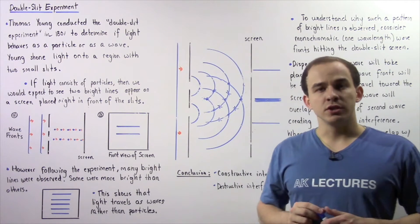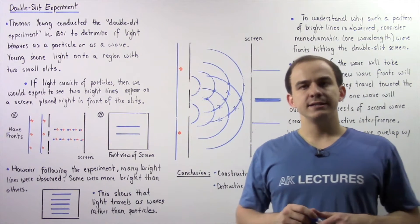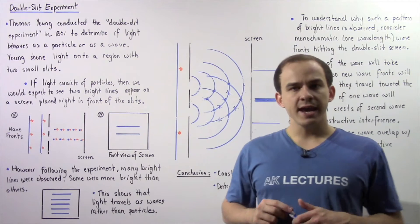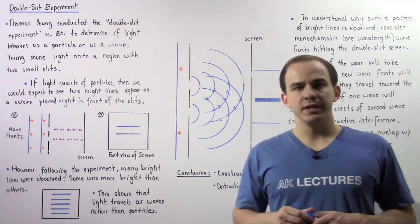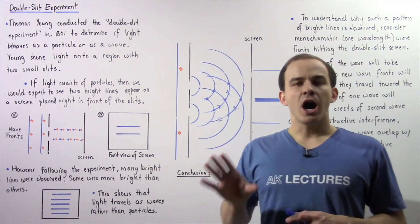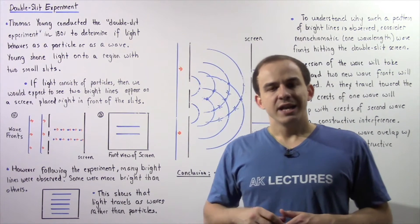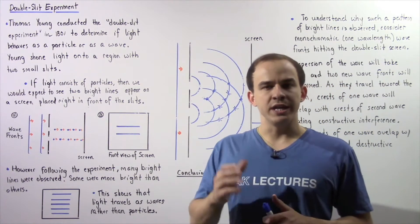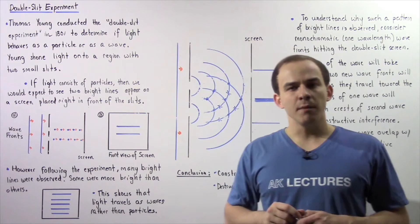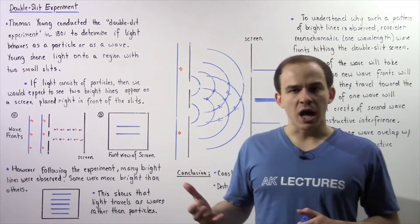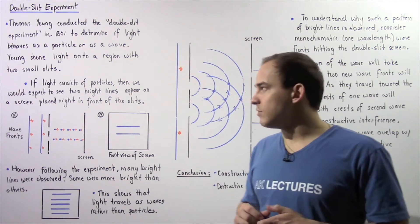He essentially took a screen that contained a double slit, two very small openings, and he shone light onto that double slit screen. Now he placed a second solid screen right in front of that double slit to help visualize where the light travels.